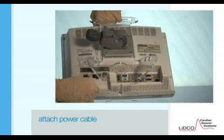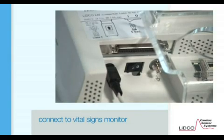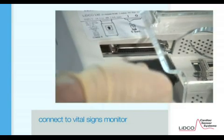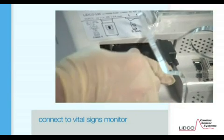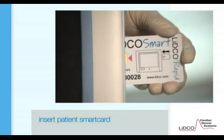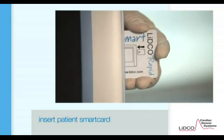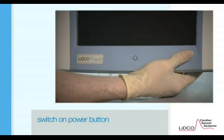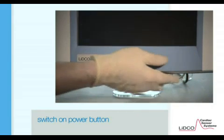First attach the power cable. Attach the supplied cable from the LIDCO-RAPID to the vital signs monitor. Insert the patient specific smart card. Switch on the power button located at the right rear corner of the monitor.